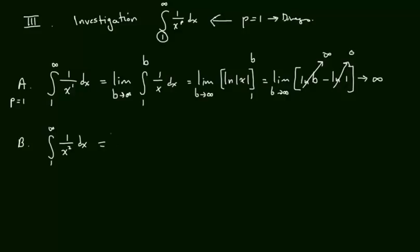This is the limit as b goes to infinity, 1 to b as follows. And this is the limit as b goes to infinity, the anti-derivative is going to be negative 1 over x, and 1 to b. The limit as b goes to infinity of negative 1 over b, minus a minus, so plus a 1.